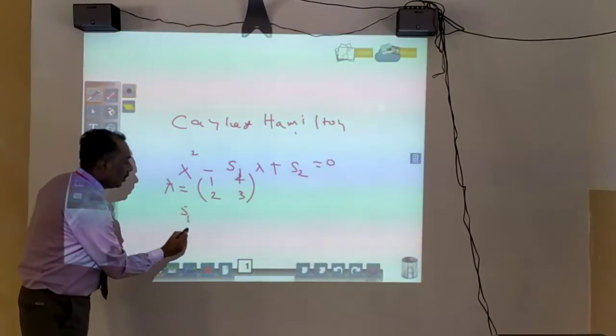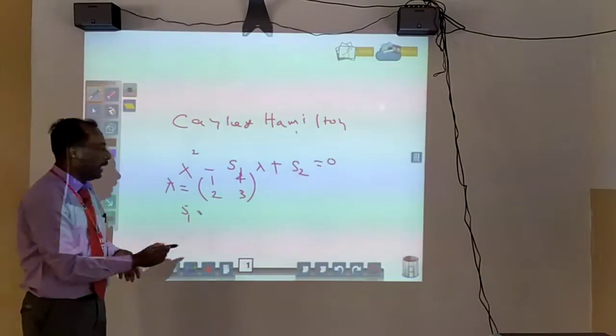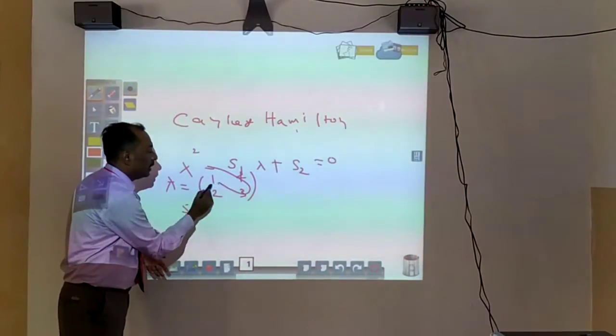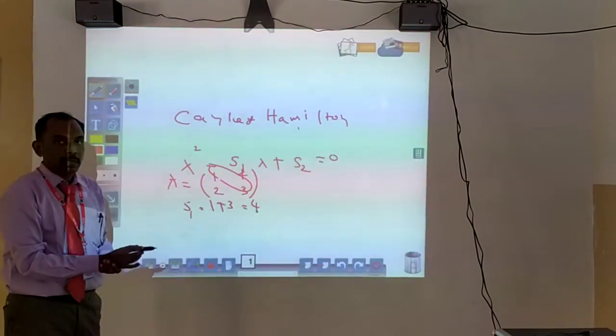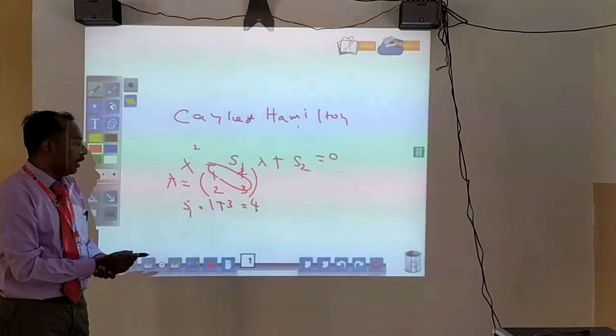First I need to find out S1. What is S1? Sum of main diagonal. The main diagonal is 1 and 3. So 1 plus 3 is 4.